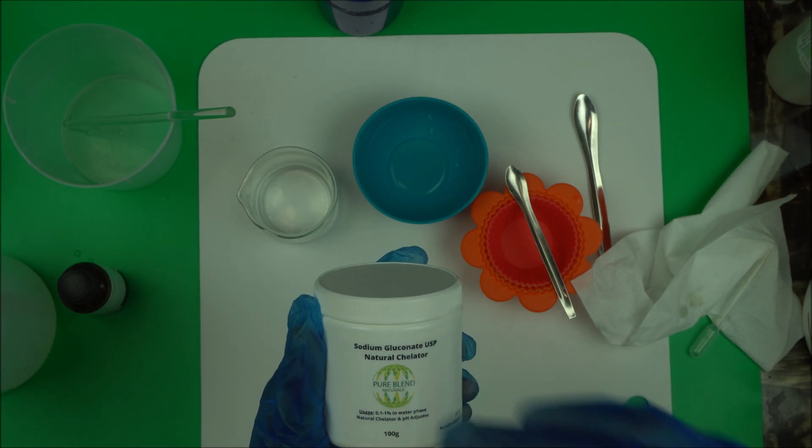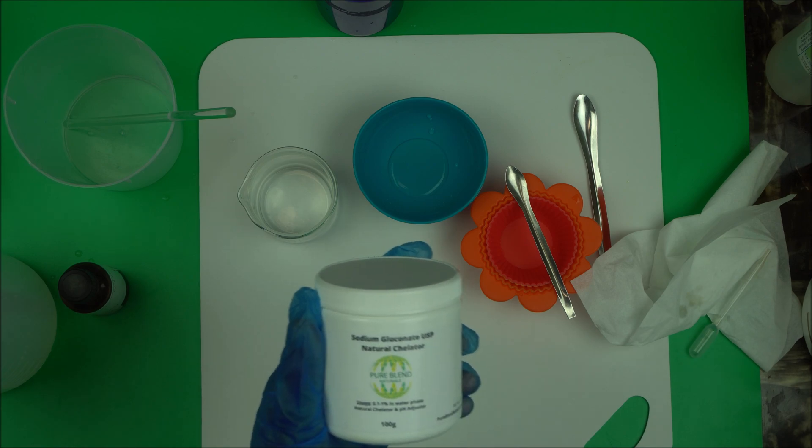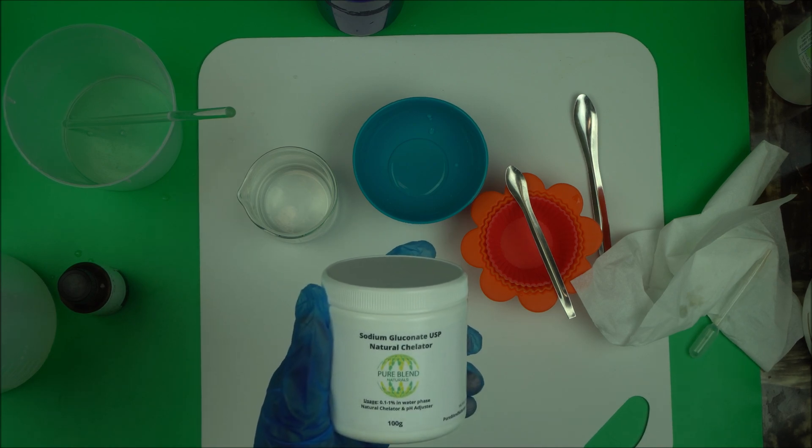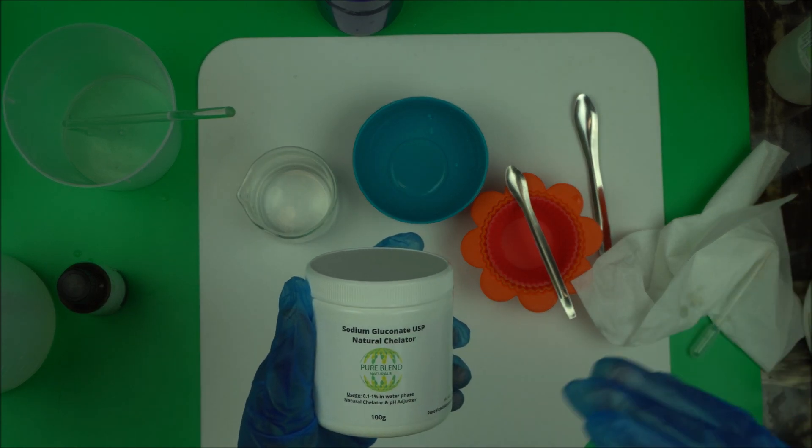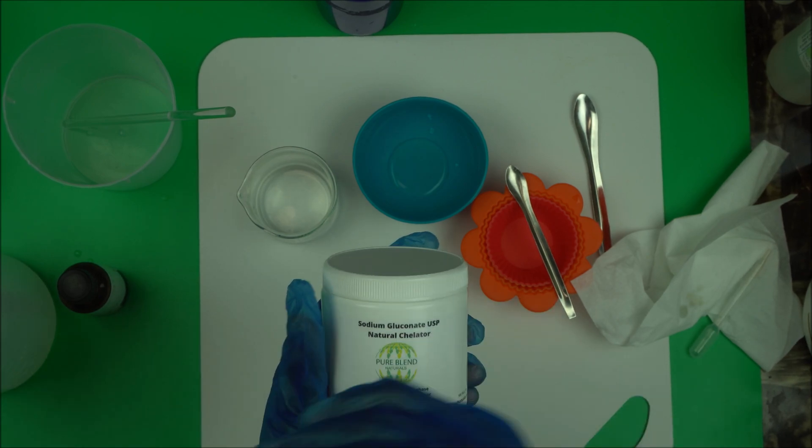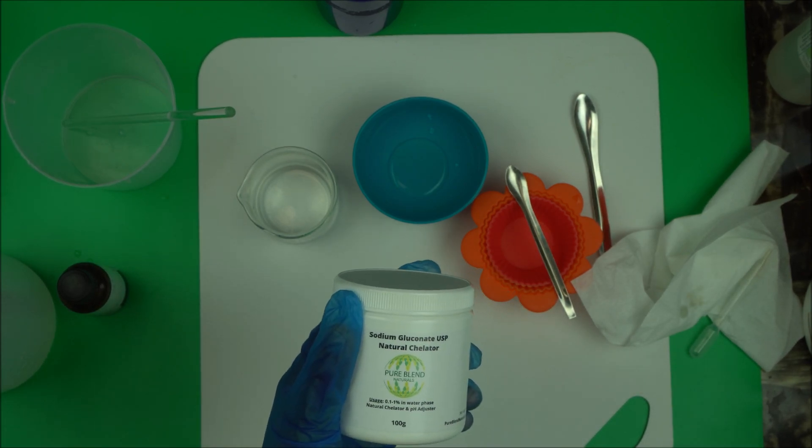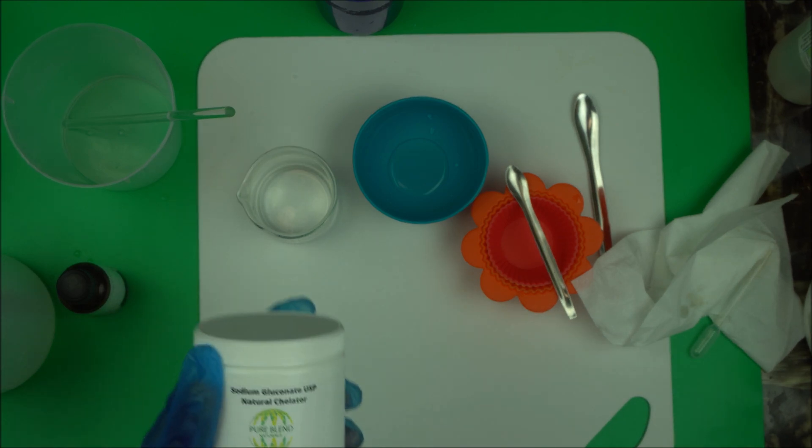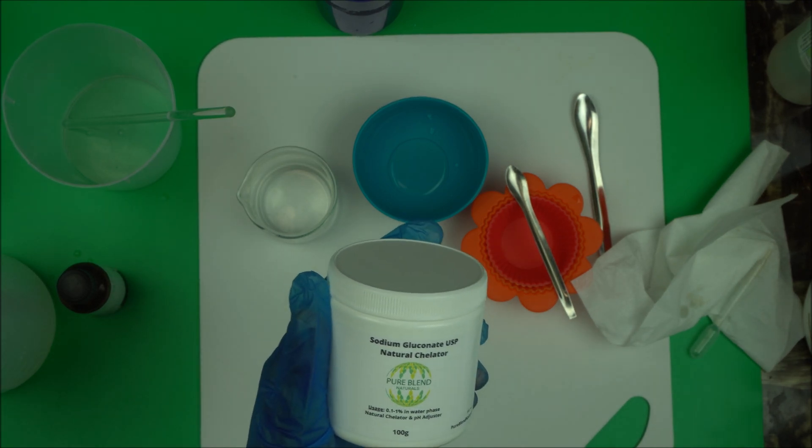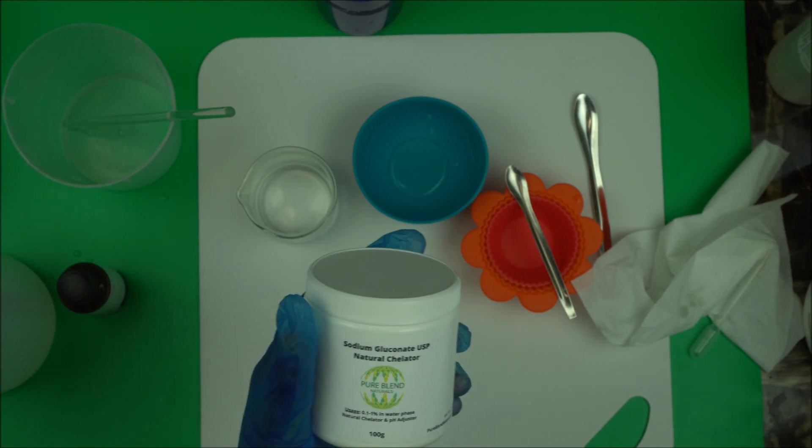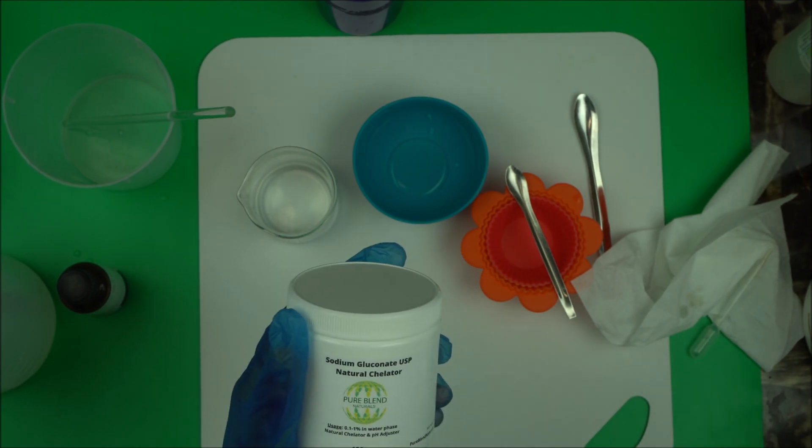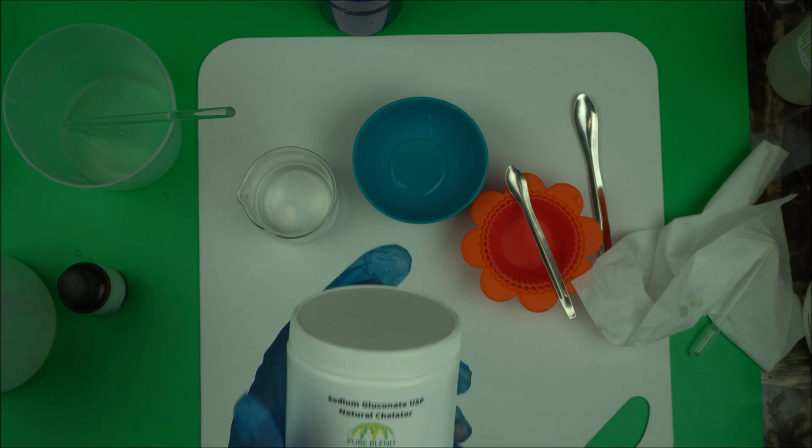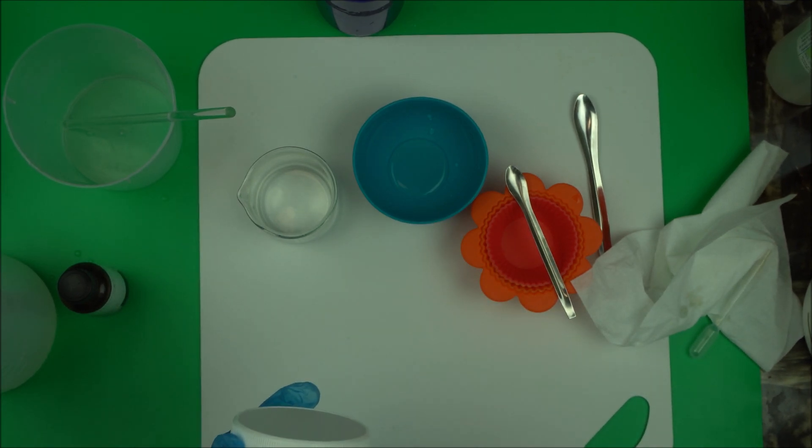My next video is how to use sodium gluconate to adjust the pH of your product. Because it's a base, we are going to use it to bump up the pH. It's a good alternative to lye when you are adjusting pH. It's a good natural pH adjuster to increase the pH of your product. If your pH is too low, if it's acidic, you add this to take it to where you want it to be. I will demonstrate that in the next video. Thanks for watching.